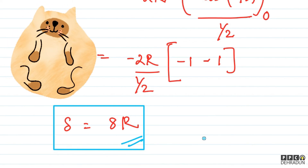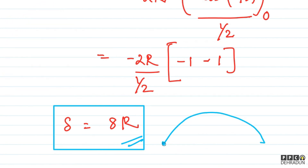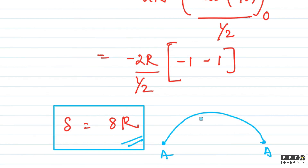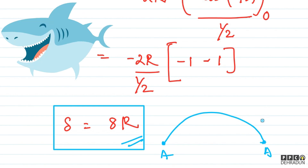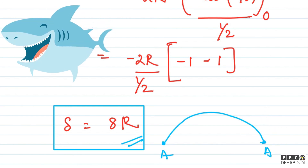The path traced by point A is called a cycloid. So the total distance is 8R. I hope the solution was clear. If you have any doubts, feel free to contact me — I'll be very happy to help. Take care, bye!